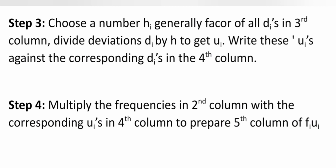Step 3: Choose a number h, generally a factor of all di's in the third column. Divide deviations di by h to get ui. Write these ui's against the corresponding di's in the fourth column. Step 4: Multiply the frequencies in the second column with the corresponding ui's in the fourth column to prepare the fifth column of fi·ui.